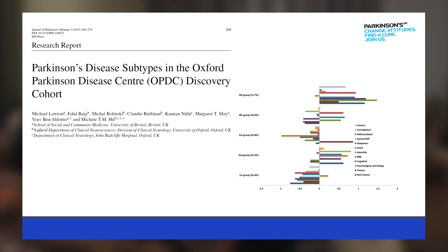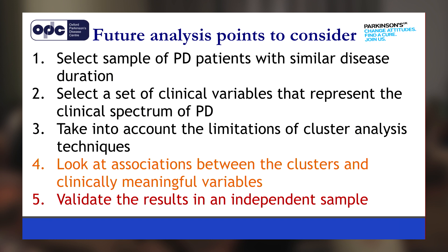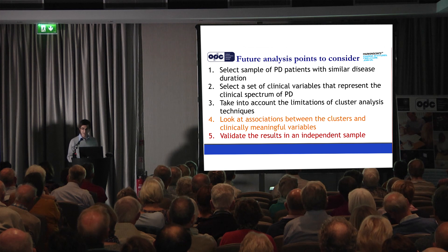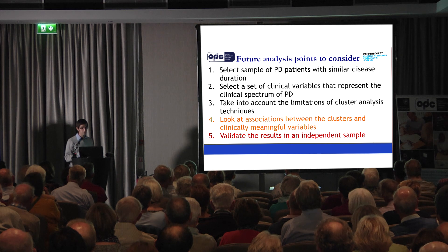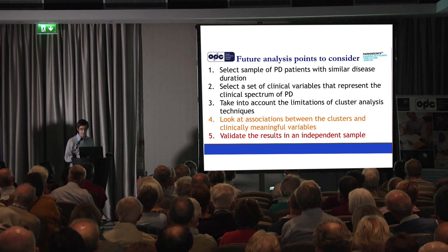In 2015, the Discovery cohort published their own cluster analysis — you might have heard Michelle speak about this at previous open days — and we found five subtypes. Going back to the analysis points from the systematic review: did we select a sample of PD patients with similar disease duration? Yes, we did, because all of the individuals in our study were recently diagnosed with the disease.